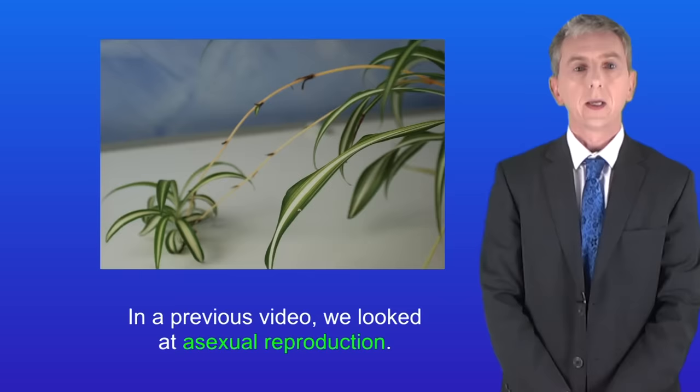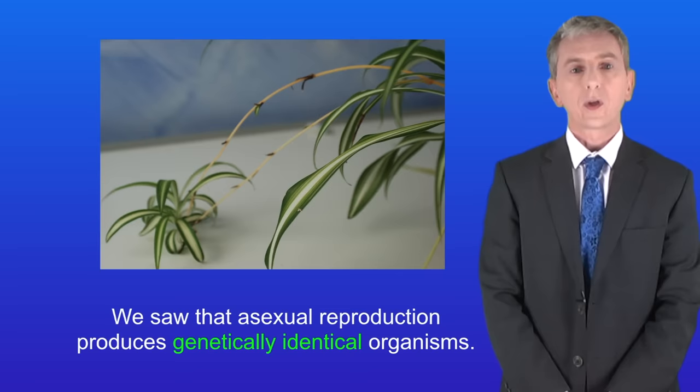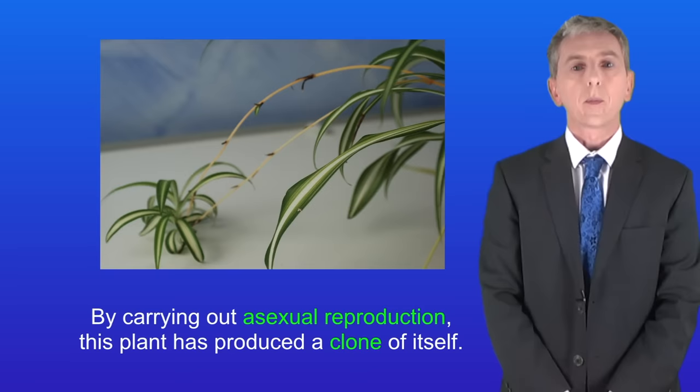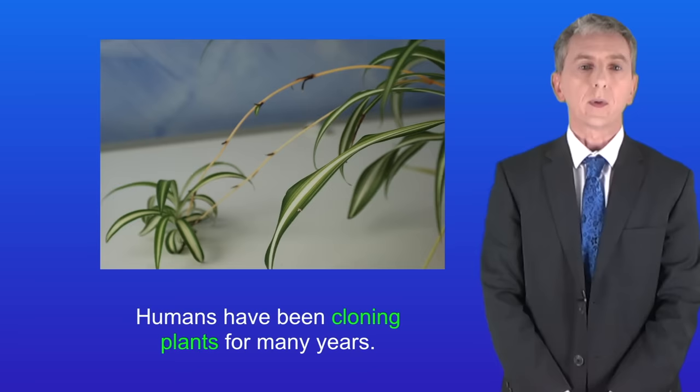In a previous video we looked at asexual reproduction. We saw that asexual reproduction produces genetically identical organisms and scientists call these clones. By carrying out asexual reproduction this plant has produced a clone of itself. Humans have been cloning plants for many years, so in this video we're going to look at the two ways that this is done.